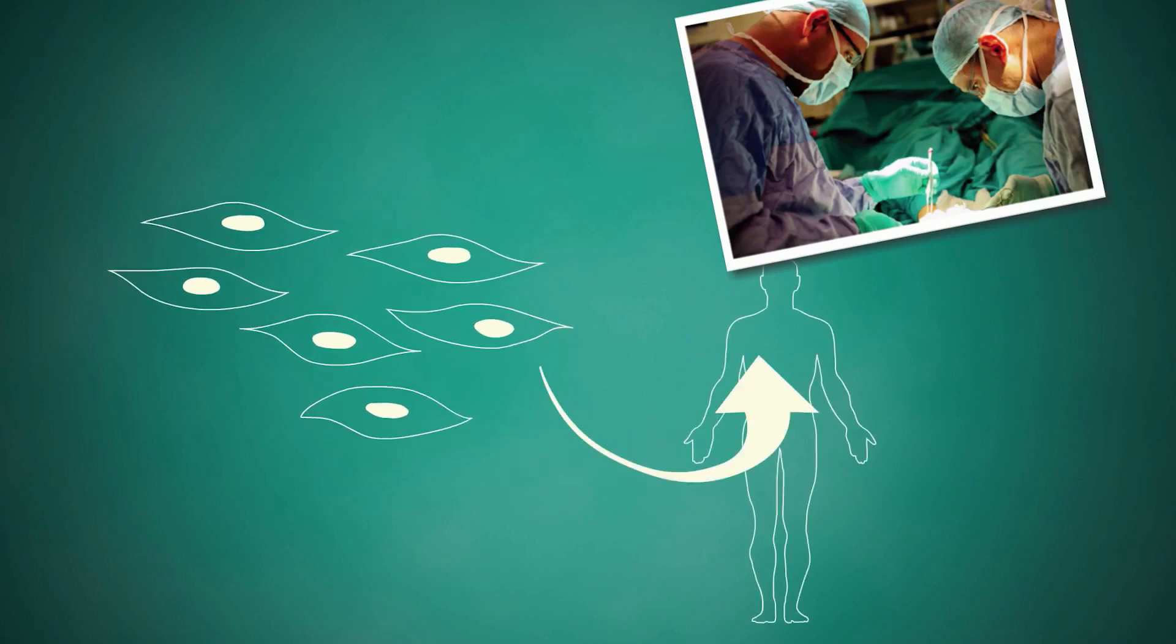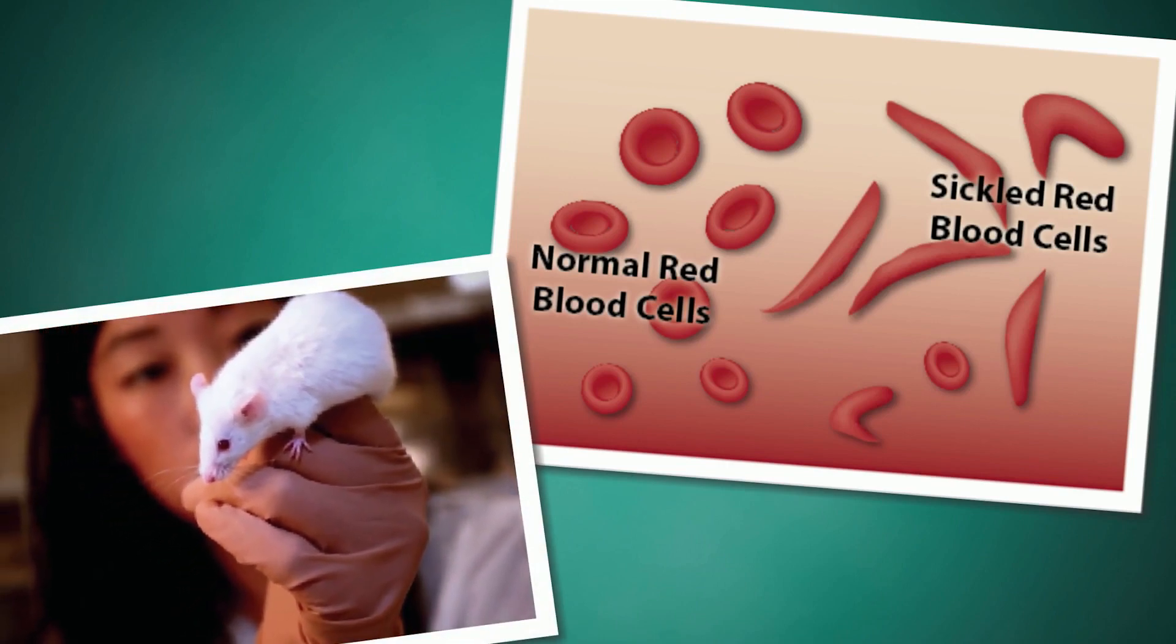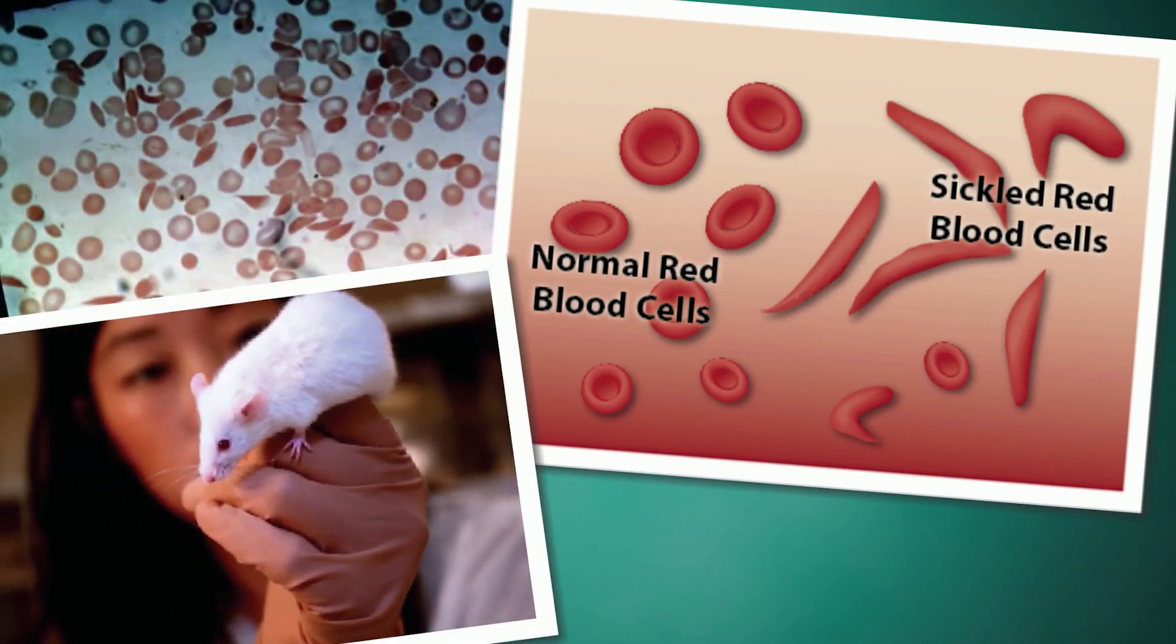Finally, the cells are differentiated into the proper cell type and put back into the patient. This process has been used to cure mice of sickle cell anemia, suggesting this approach may also work in humans.